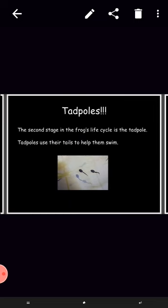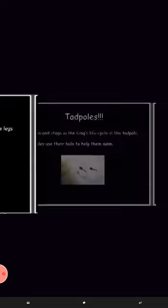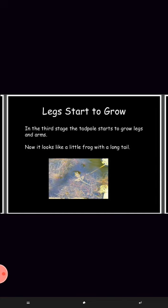Tadpoles. The second stage in the frog's life cycle is the tadpoles. Tadpoles use their tails to help them swim.